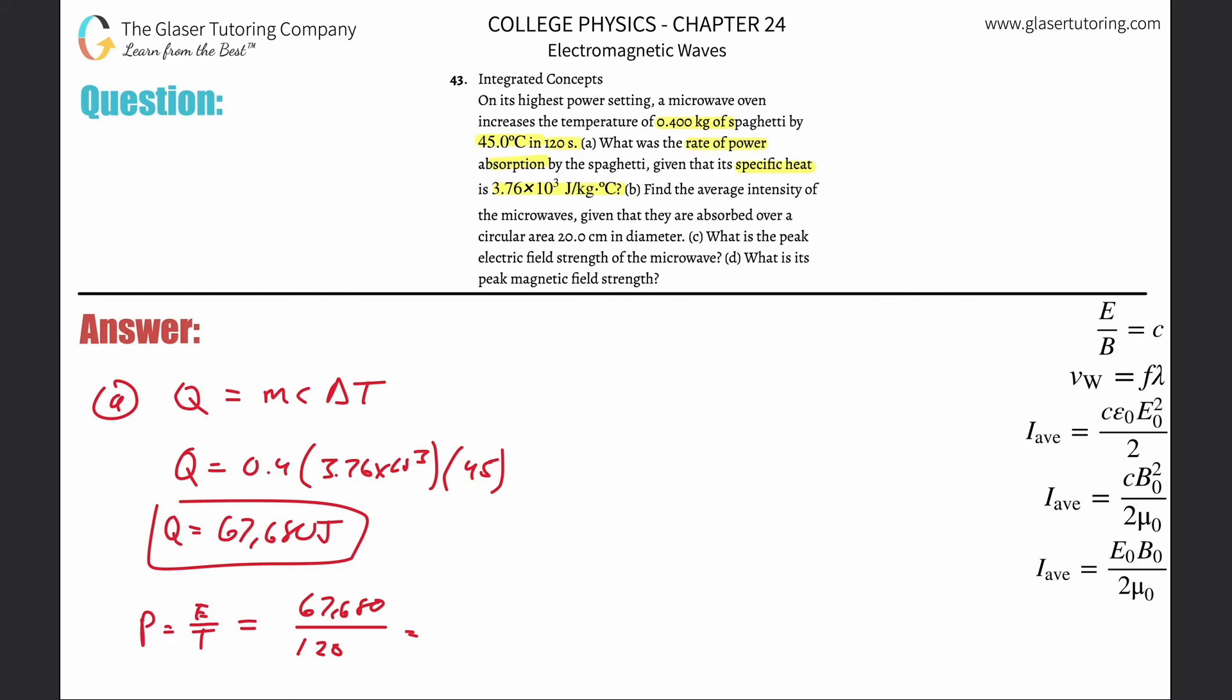This basically works out to be about 564 joules per second was basically given or donated to the pasta. And remember, joules per second is the same thing as a watt. And that makes sense.